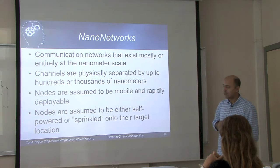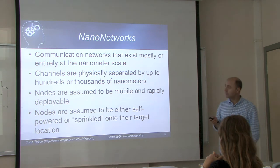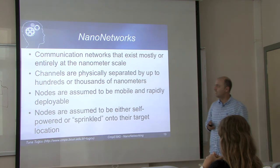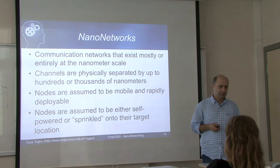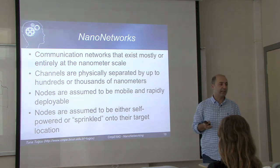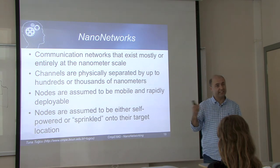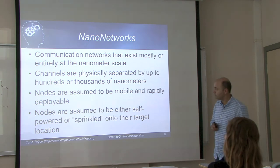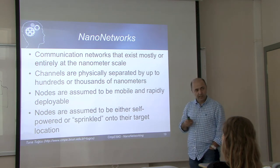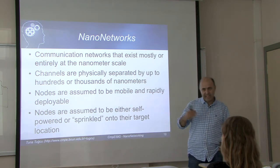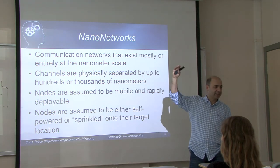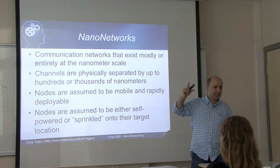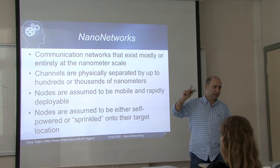Nanonetworks are communication networks that exist mostly or entirely at the nanometer scale — meaning either all dimensions are at the nanoscale, or at least one dimension is at the nanoscale. If one dimension qualifies, that's sufficient. We allow other scales because we need gateways between the nanoscale and higher scales — gateways touching both parts are still considered part of the nanonetwork.